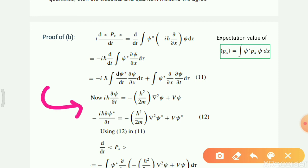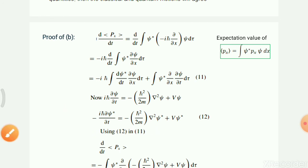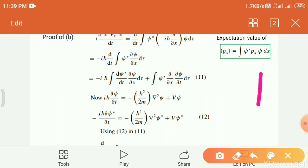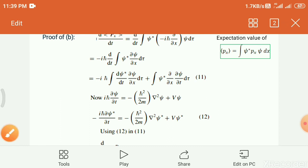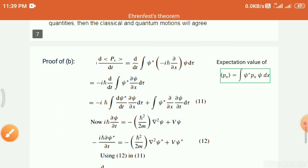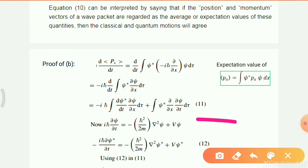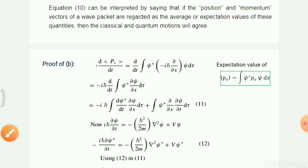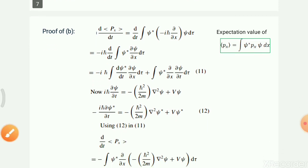We know how to handle this — it follows the same type of equation as before, in the other direction. This is called equation number 12. Substituting into the equation, we follow the same steps as condition one.